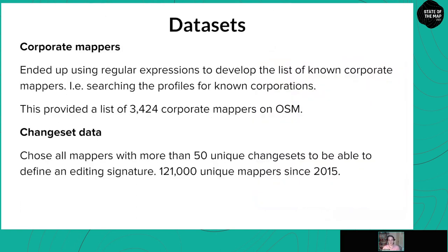What we ended up doing for our corporate mappers dataset was a regular expression search through the profiles to find instances of specific company names extracted from the OSM organized editing activities page. We found 3,424 corporate mappers on OpenStreetMap. Now that we have this dataset of known corporate mappers, we want to compare how they differ from volunteer mappers on the platform. This required working with the changeset data, which is available publicly on AWS. We chose all mappers with more than 50 unique changesets, leaving us with 121,000 unique mappers since 2015.